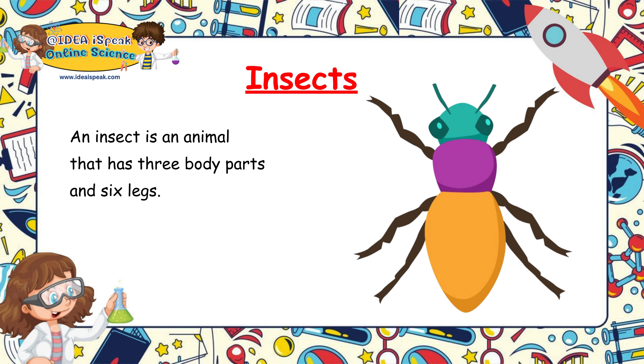Insects: an insect is an animal that has three body parts and six legs — the head, the thorax, and the abdomen.